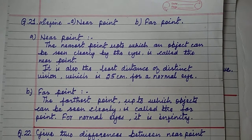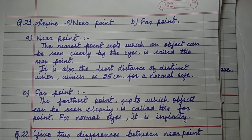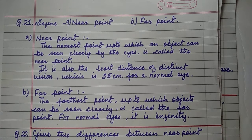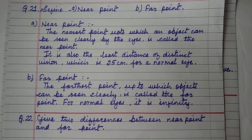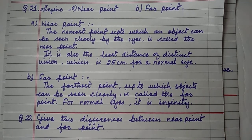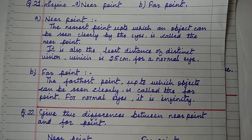Define near point and far point. Near point: the nearest point up to which an object can be seen clearly by the eyes with normal eyesight is called the near point. It is also the least distance of distinct vision, which equals 25 centimeters for normal eyes. Far point: the farthest point up to which an object can be seen clearly is called the far point. For normal eyes, it is infinity distance.